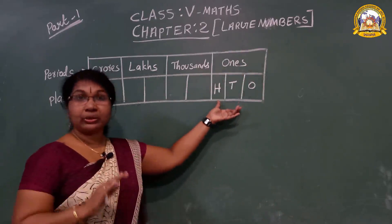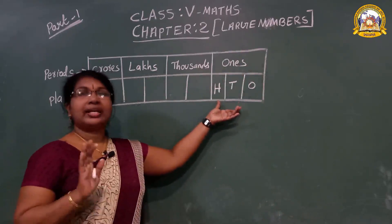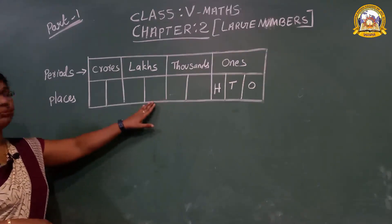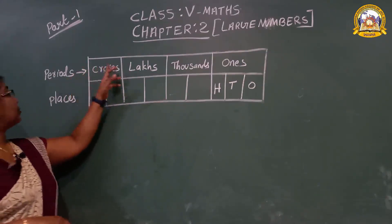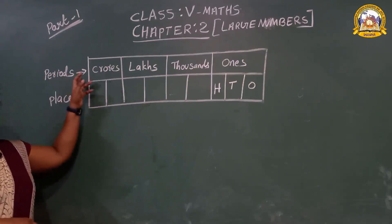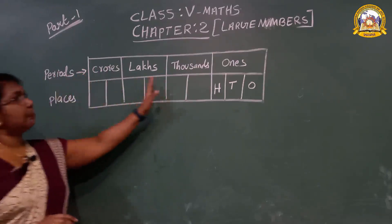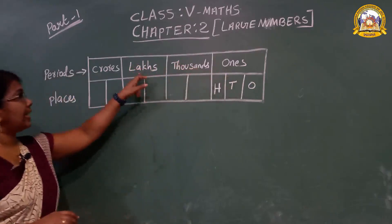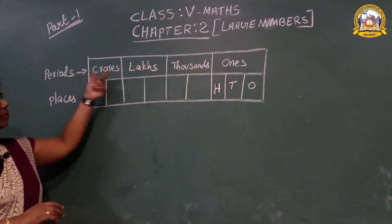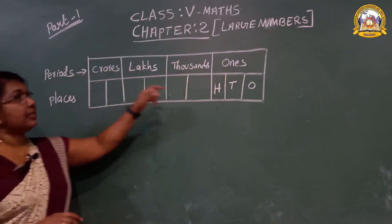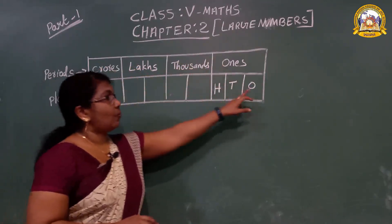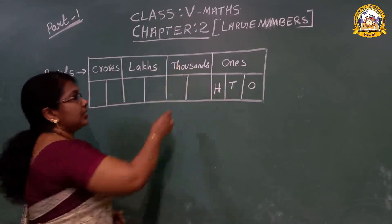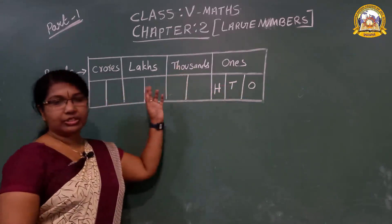How many digits are you going to study this year? You know 9-digit numbers. Here I draw columns. Here it is written places, and here it is written periods. In periods — ones, thousands, lakhs, crores. What are these columns called? Periods. In one period there are 3 places: ones, tens, hundred, and thousand places.